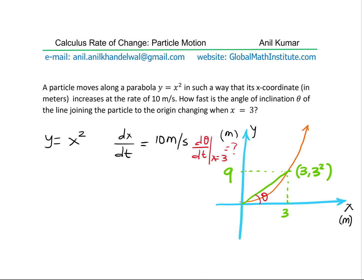So we can actually relate this in terms of the angle itself. Let us say we call this as y and this is x. So in that case, we can say tan theta will be the ratio of y and x. So we can write this as y over x.